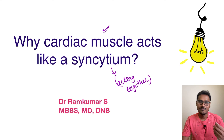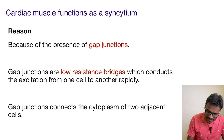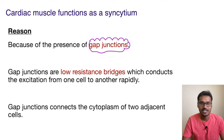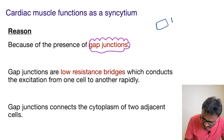But what gives this property of syncytium to the cardiac muscle? The answer is pretty simple — it has something called gap junctions. The cardiac muscle has something called gap junctions. Let's try to understand what gap junctions are.